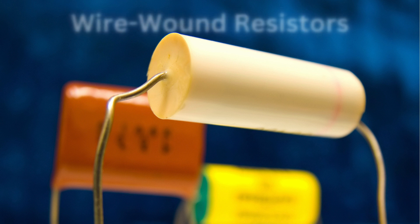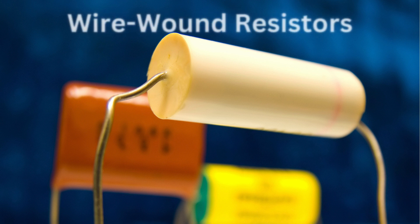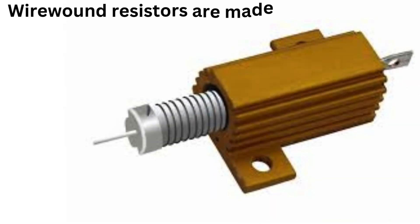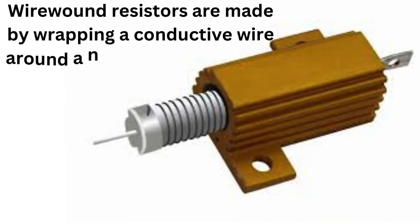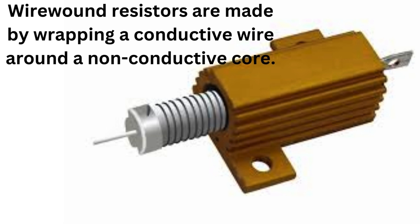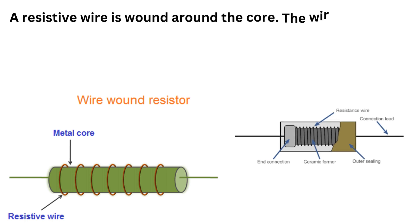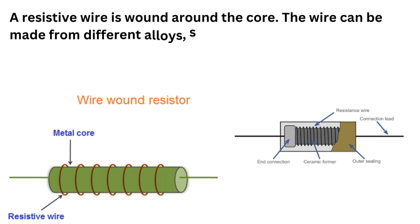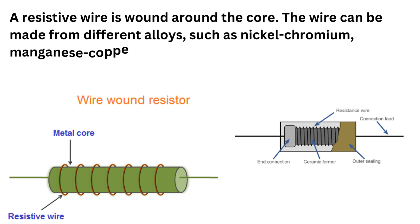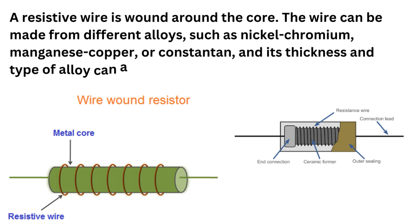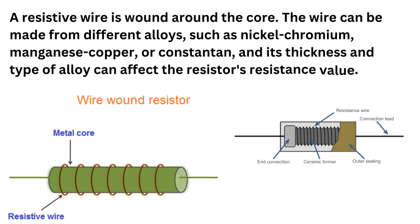Wire wound resistors are used for high power applications. They are made by wrapping a conductive wire around a non-conductive core and then covering the result with an insulating material. The wire can be made from different alloys such as nickel chromium, manganese copper, or constantin, and its thickness and type of alloy can affect the resistor's resistance value.